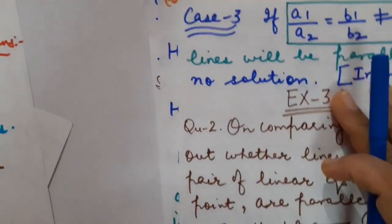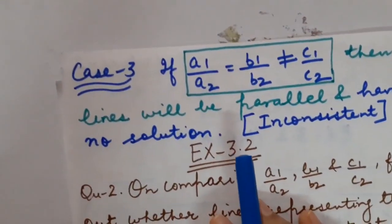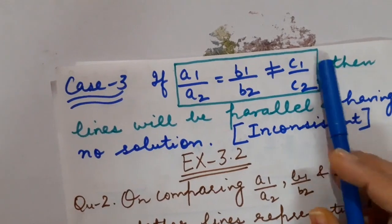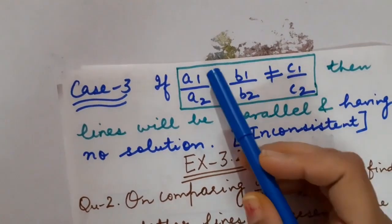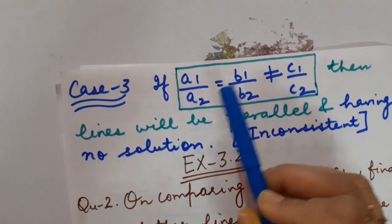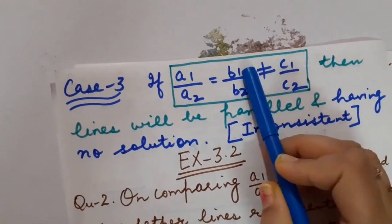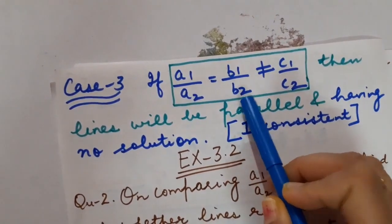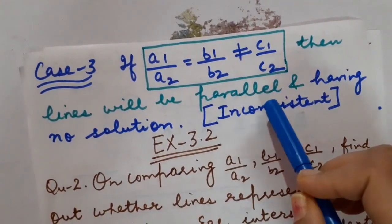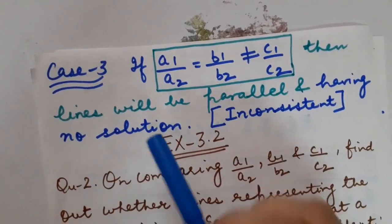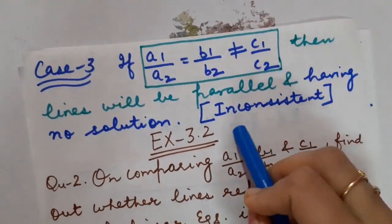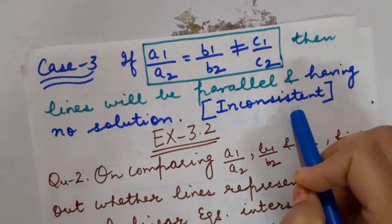Case number 3: if a1/a2 = b1/b2 but they are not equal to c1/c2 — the ratio of coefficients of x equals the ratio of coefficients of y, but not the ratio of the constant terms — then the lines will be parallel to each other with no solution. So the system will be called inconsistent.